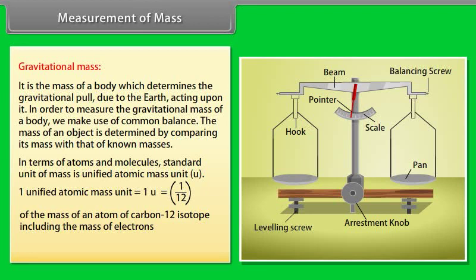One unified atomic mass unit is equal to one U is equal to one upon twelve of the mass of an atom of carbon twelve isotope, including the mass of electrons, is equal to 1.66 into 10 raised to the power minus 27 kg.